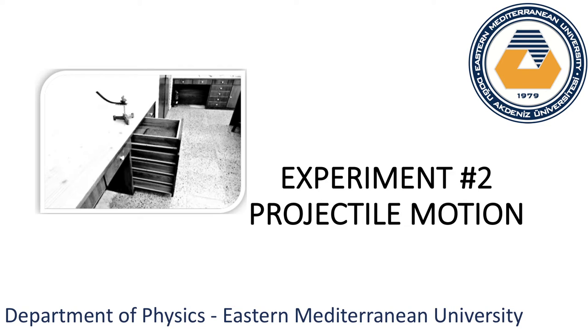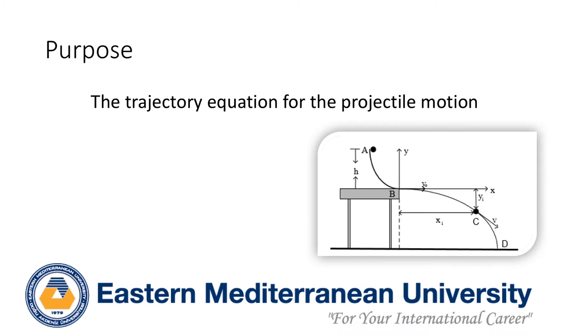Welcome to experiment 2 for Physics 101. This experiment is about projectile motion. The purpose of this experiment is to investigate the trajectory equation for the projectile motion.